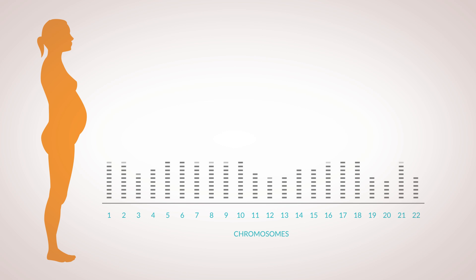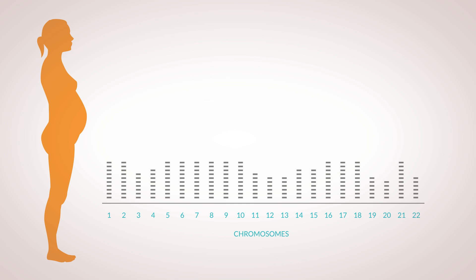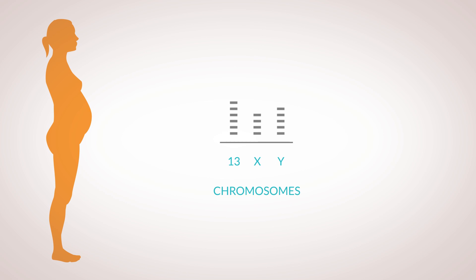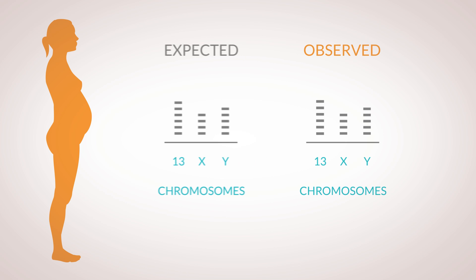These methods take the maternal blood sample and basically count the total number of chromosomes present. This approach has inconsistent amplification during sequencing that makes it difficult to determine any differences between the expected amount of DNA compared with the observed. It is especially problematic on chromosomes 13, X, and Y.